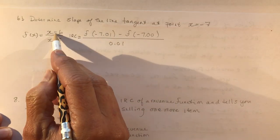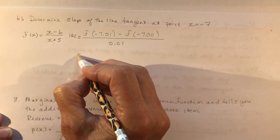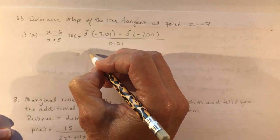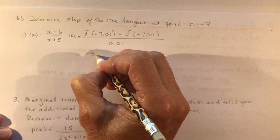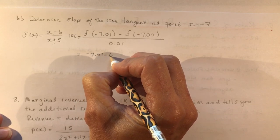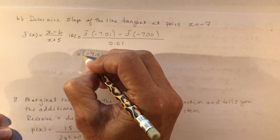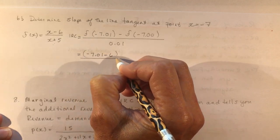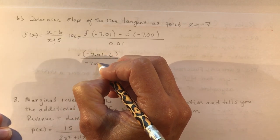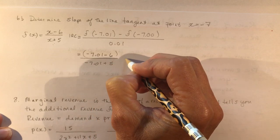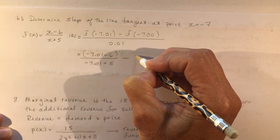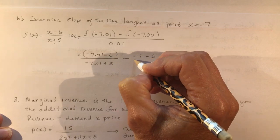Now don't forget that you have a rational expression here, so you have to plug it into, well, let's write it out. So I would have minus 7.01 minus 6, that's in the numerator, divided by minus 7.01 plus 5.